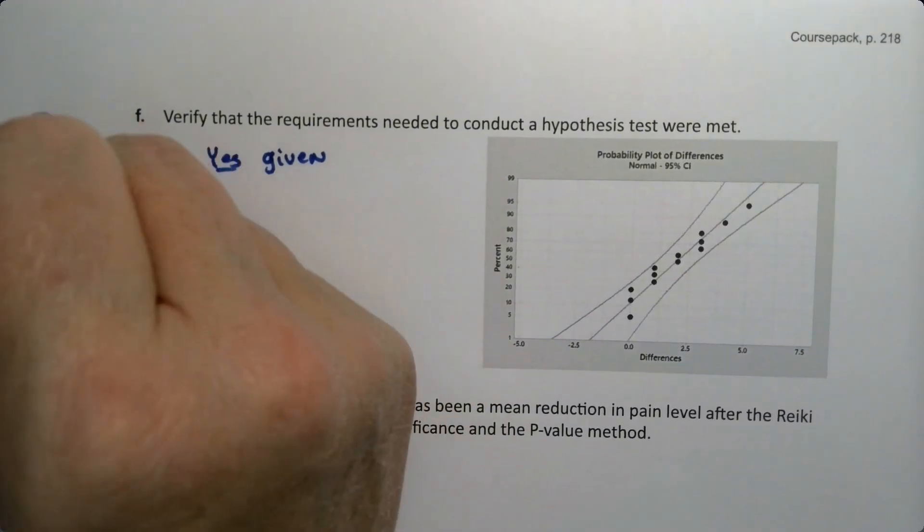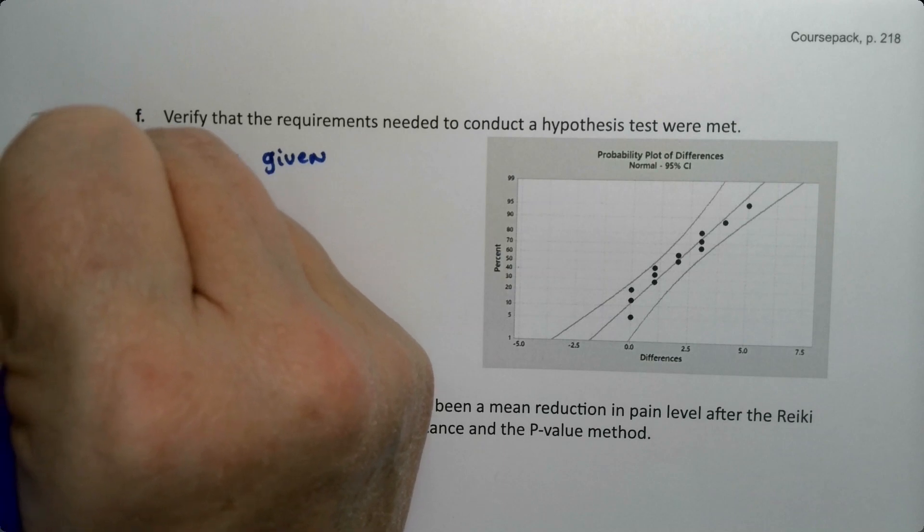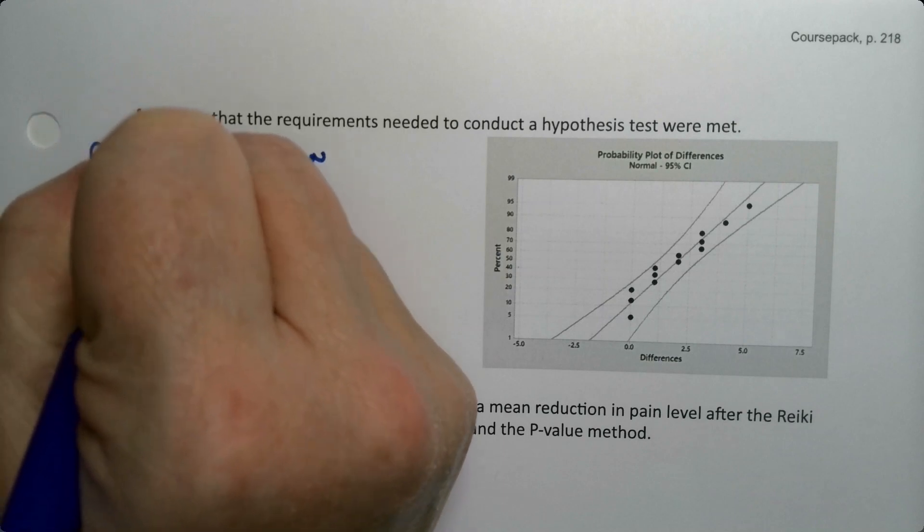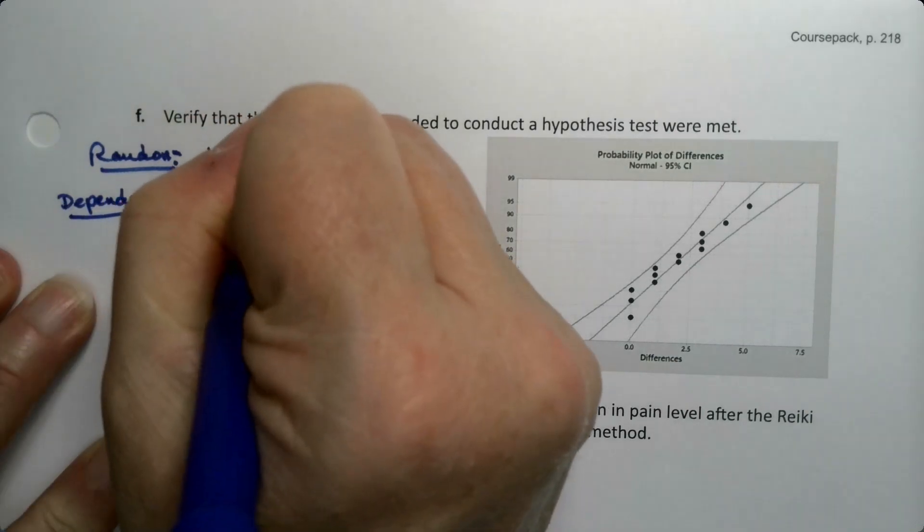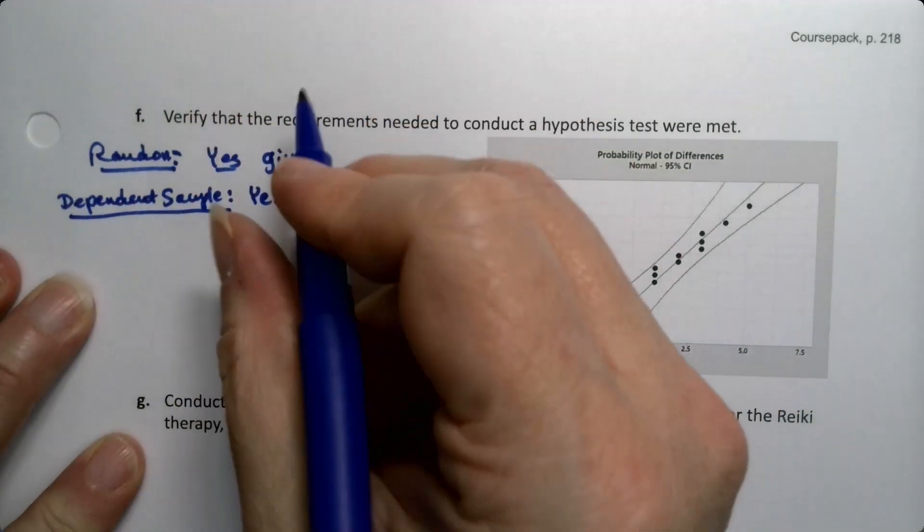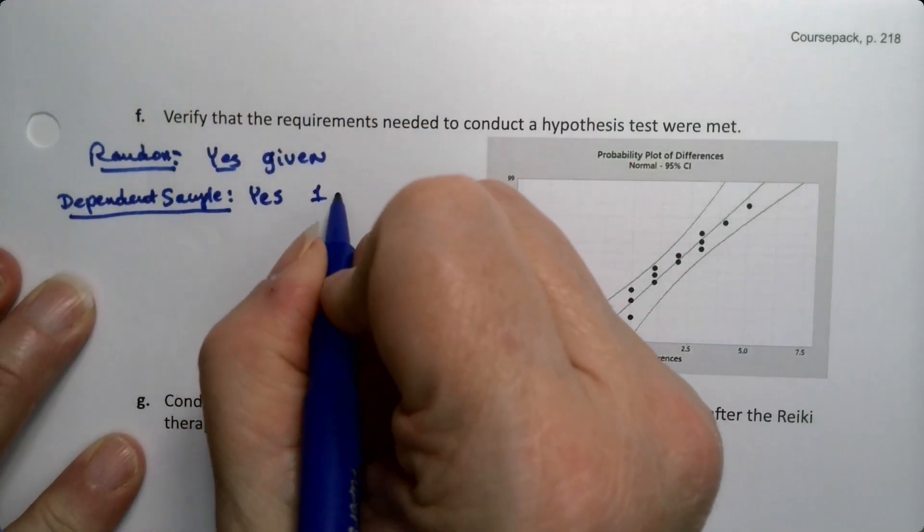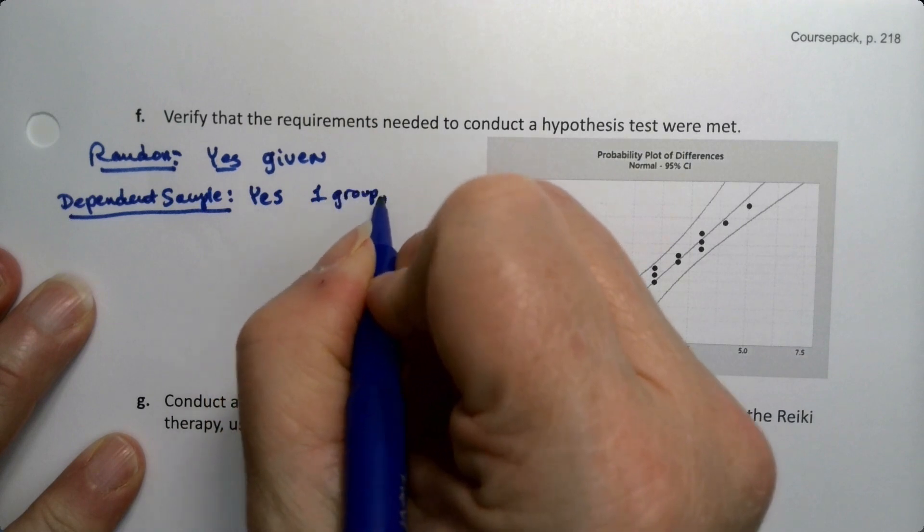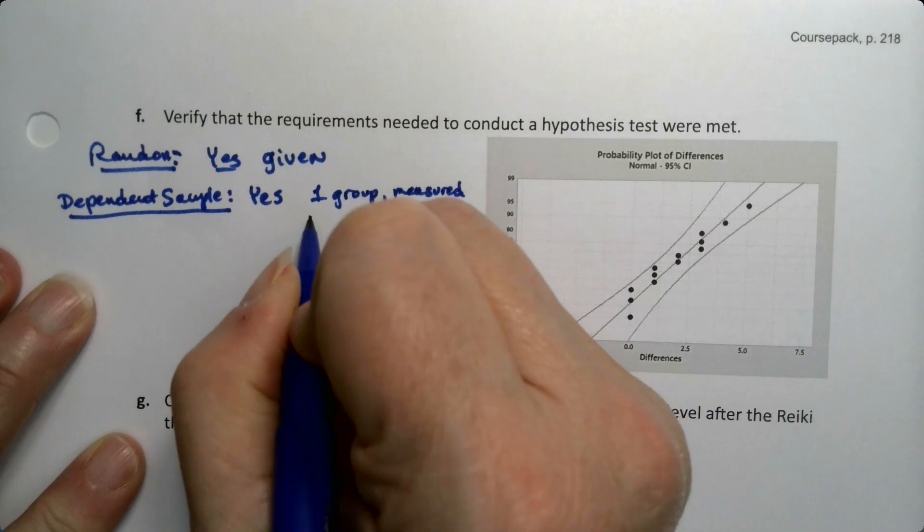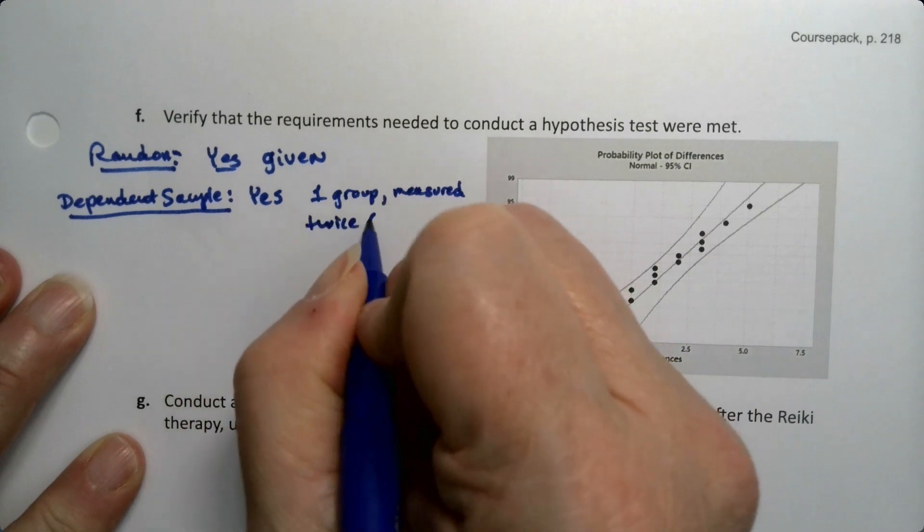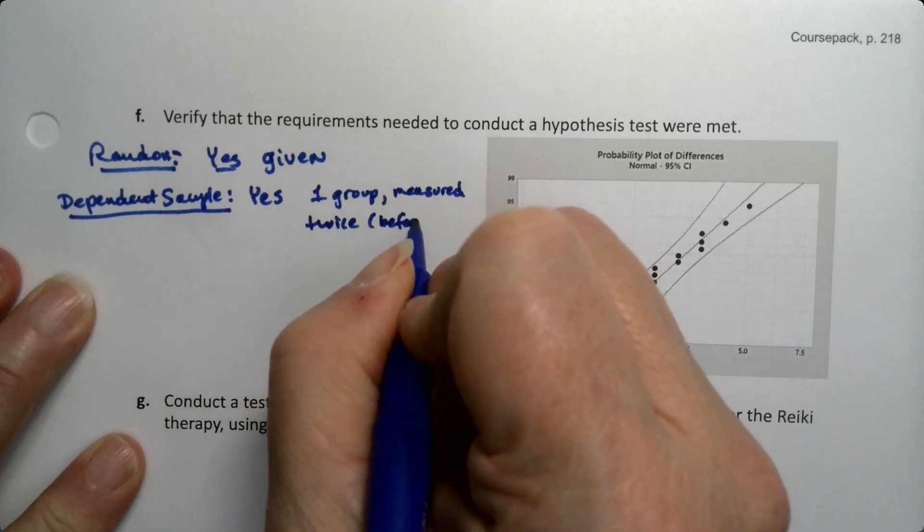Now we need a dependent sample. Well we definitely have that because it's before and after. Yes, it was one group measured twice before and after.